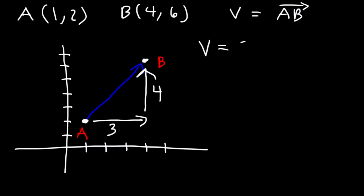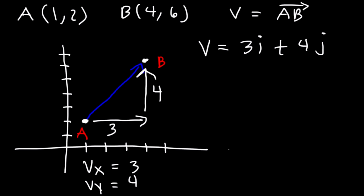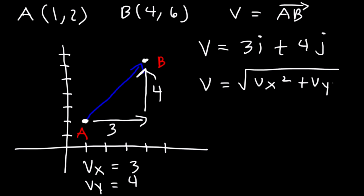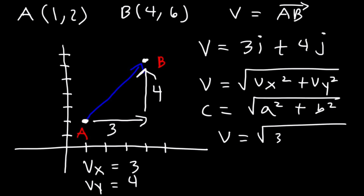So vector V can be expressed as 3i plus 4j. The i is associated with the x component of vector V, so Vx is 3. The y component of vector V is 4, associated with j. To find the magnitude of vector V, use the equation: V equals the square root of Vx squared plus Vy squared. This comes from the Pythagorean theorem: C equals the square root of A squared plus B squared.